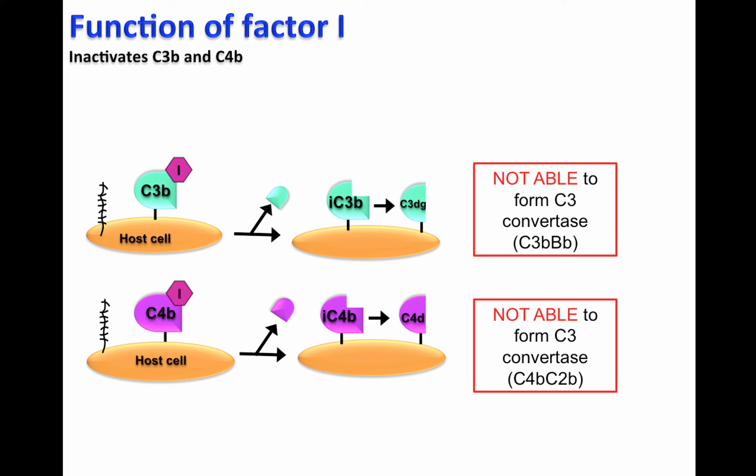Factor I plays a fundamental role because it protects the cell surface from complement mediated attack by inhibiting C3b and C4b, and therefore inhibiting the formation of the C3 convertases of the lectin, classical, and alternative pathways.